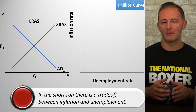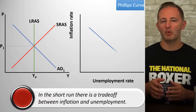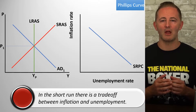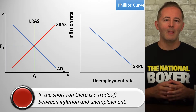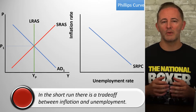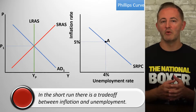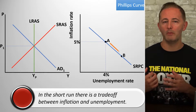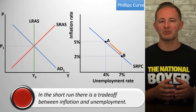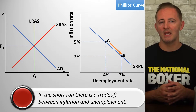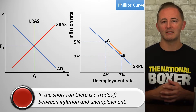The short-run Phillips curve shows that there is a trade-off between inflation and unemployment in the short run. The downward-sloping SRPC curve shows this clearly. If we move from point A to point B, we can see that the inflation rate decreases, but the unemployment rate rises.